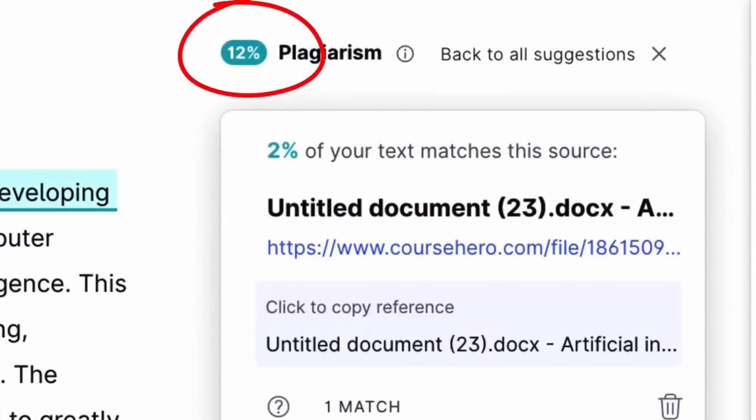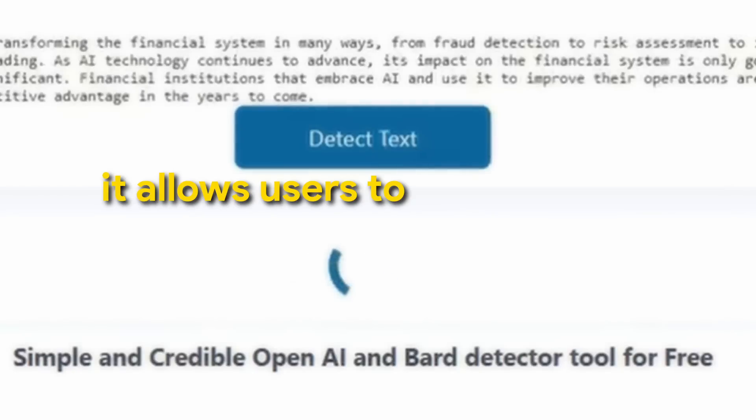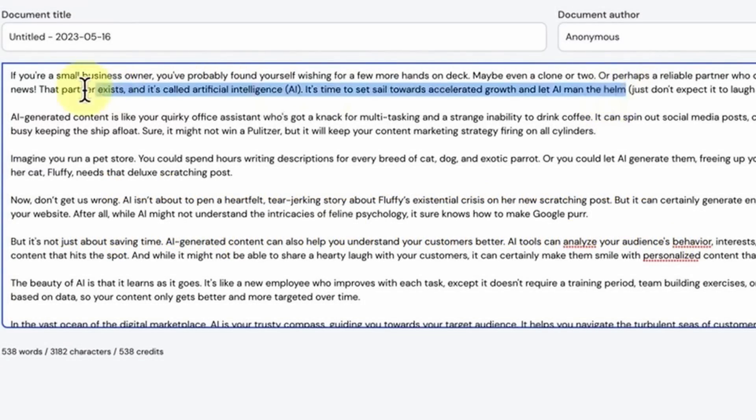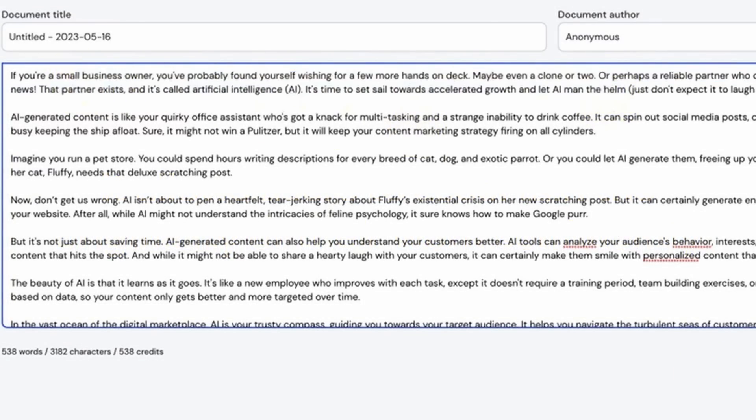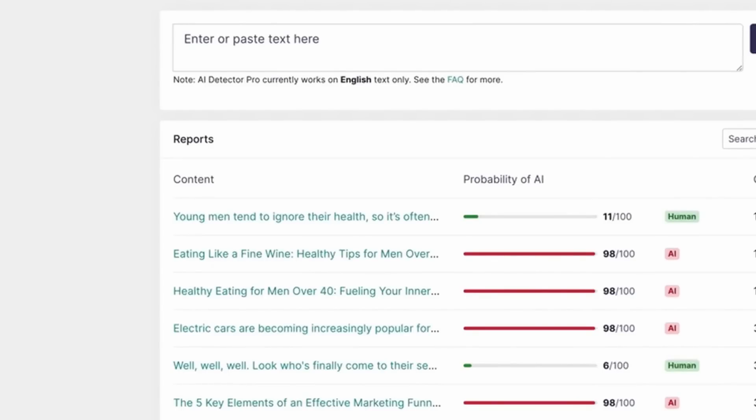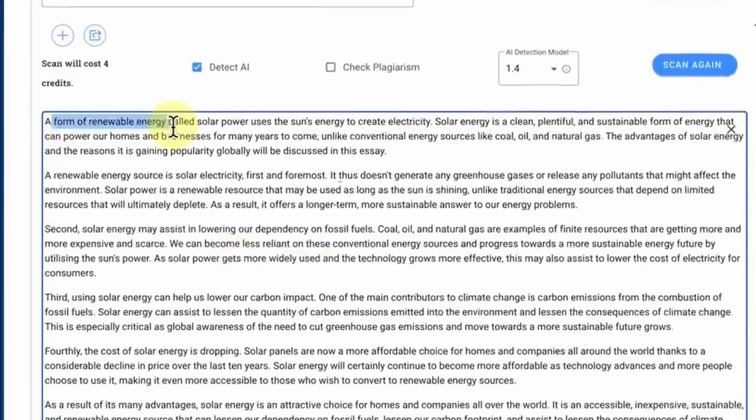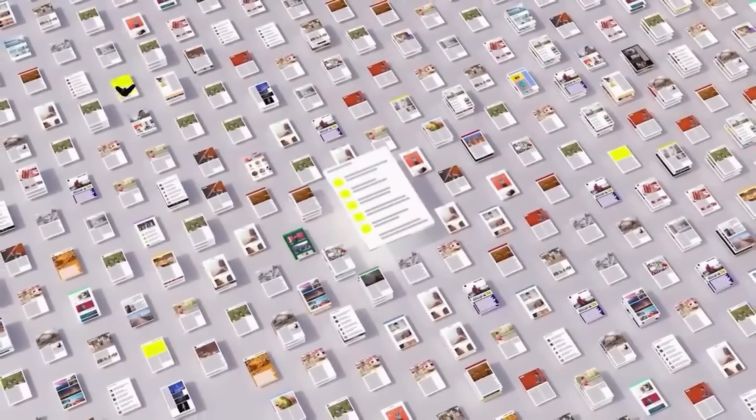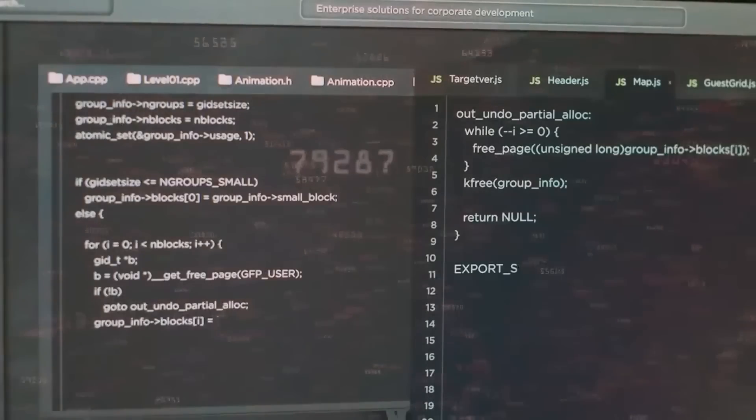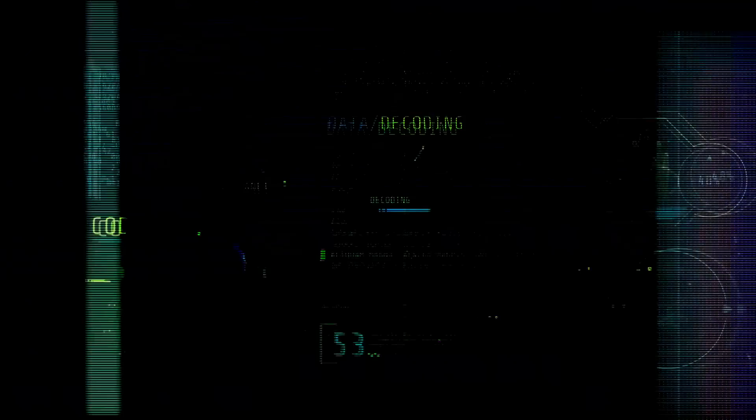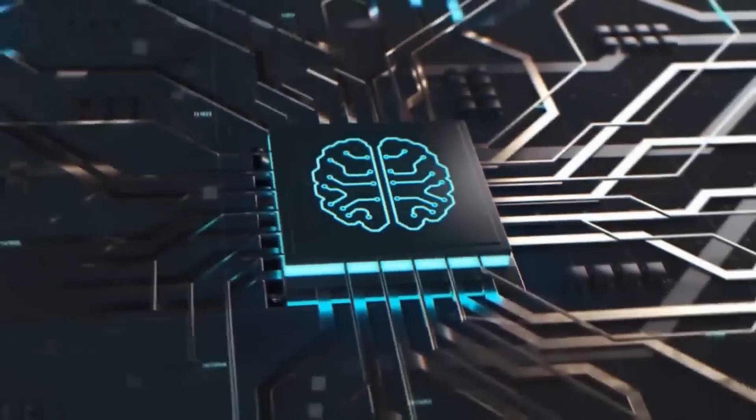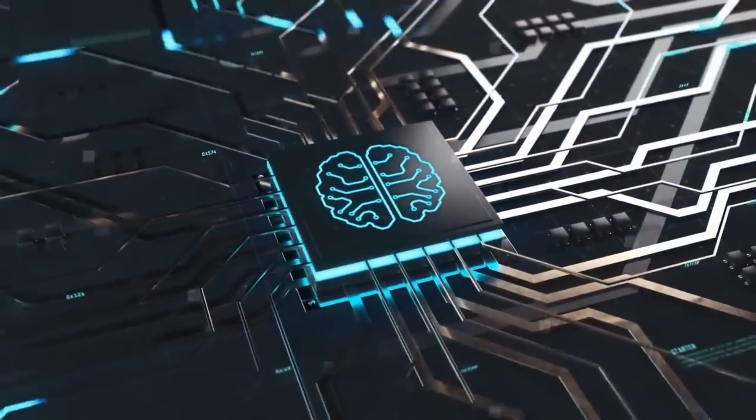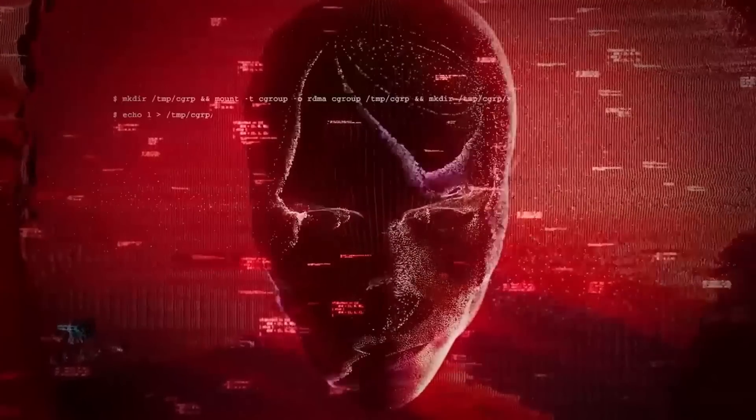With a best-in-class plagiarism detection tool, it allows users to ascertain the originality of their work confidently. Its intuitive document organization features facilitate easy categorization and labeling, while its multi-format upload feature supports processing of Word and PDF documents. Designed to cater to academics and web publishers alike, Winston AI is committed to staying at the forefront of AI language technology trends, ensuring it remains a leading tool in content authenticity and plagiarism detection.